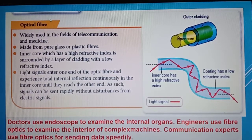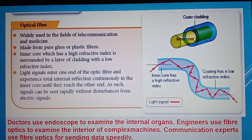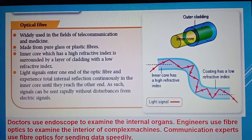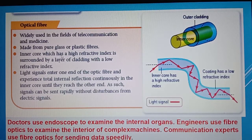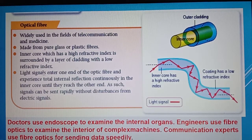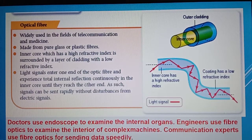This is optical fiber. Optical fiber is made of two layers: an inner core and an outer cladding. The inner core is denser than the outer cladding. It can be made from pure glass or plastic fibers. The inner core has a high refractive index and is surrounded by a cladding layer with a low refractive index. Light signals enter one end of the optical fiber and experience continuous total internal reflection in the inner core until they reach the other end. Signals can be sent rapidly without disturbance from electric signals.